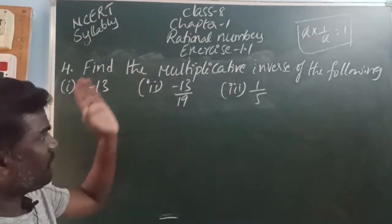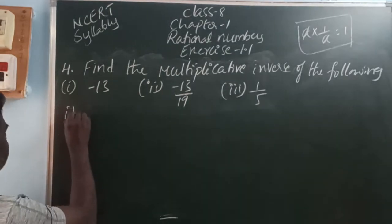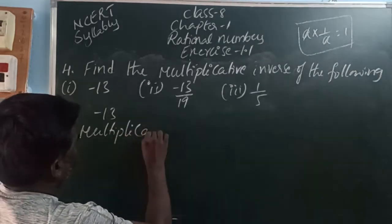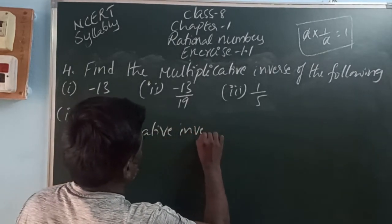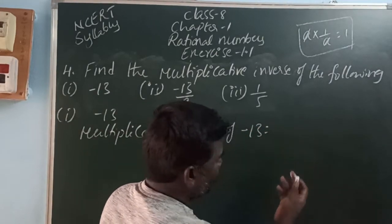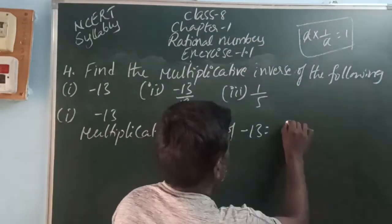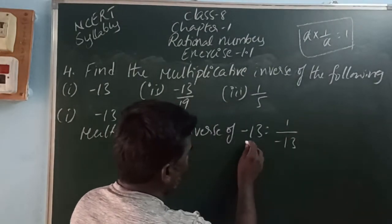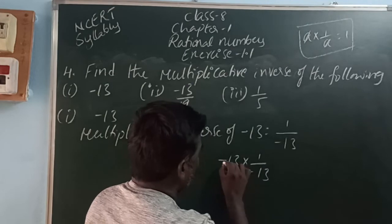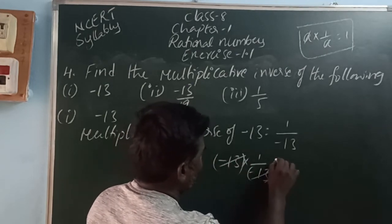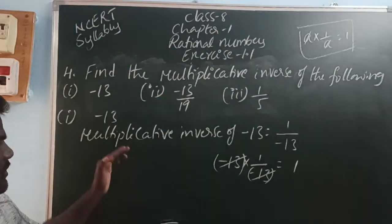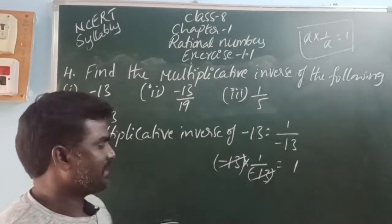Find the multiplicative inverse of minus 13. The multiplicative inverse of minus 13 is 1 by minus 13. When you multiply minus 13 into 1 by minus 13, minus 13 and minus 13 cancel, and we get 1. So 1 is called the multiplicative identity element. Therefore, the multiplicative inverse of minus 13 is 1 by minus 13.